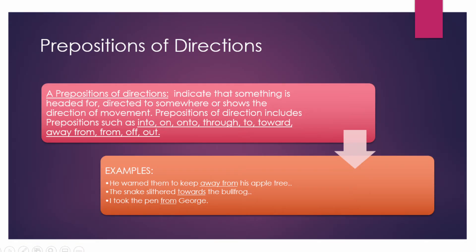Our next agenda is preposition of direction. A preposition of direction indicates something which is aimed at or directs somewhere, or shows the direction of movement. Prepositions of direction include: into, on, onto, through, to, towards, away from, from, off, and out.